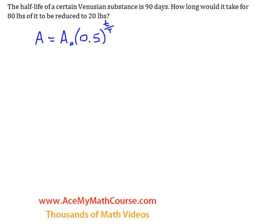The half-life of a certain Venusian substance is 90 days. So right away we can plug that over here for big T, because big T represents just the half-life.